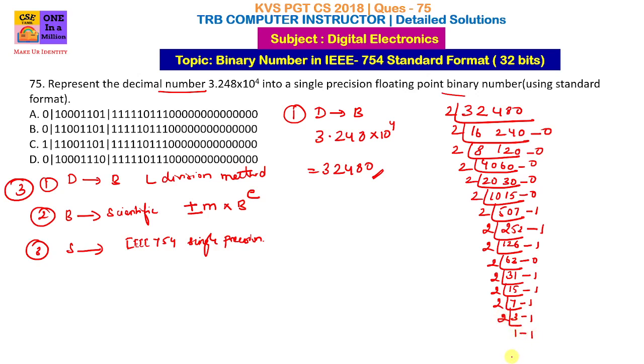After applying the L division method, we write the binary number starting from the last remainder upward to get the binary representation.